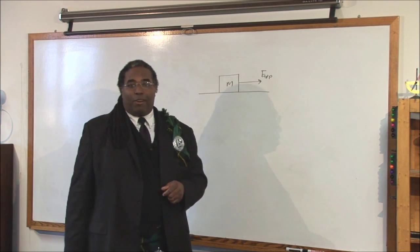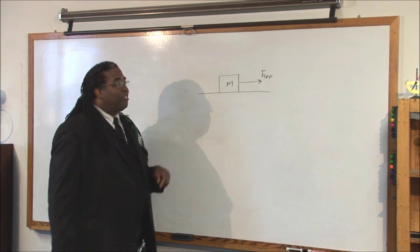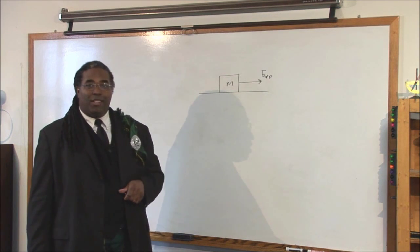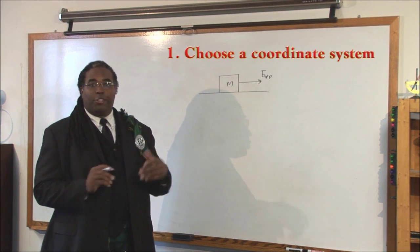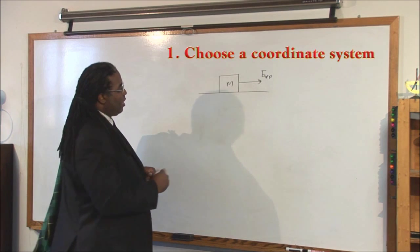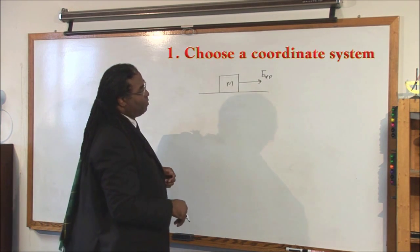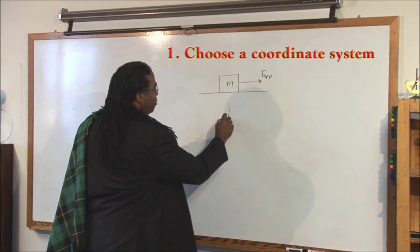So, let's get back to the problem. We're going to use the five steps to solve this problem. So, step one, choose a coordinate system. I look at the problem, and I see that it's on a horizontal surface. I'm going to choose an x-y coordinate system.